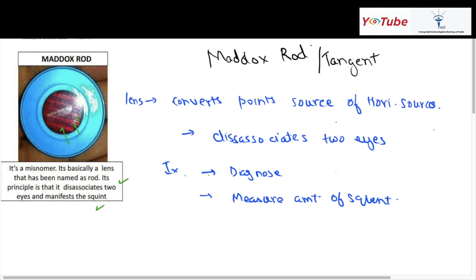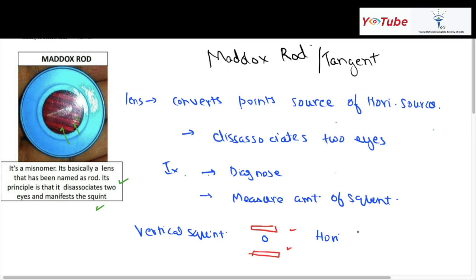Here you can see a red color disk with several parallel grooves. It converts a point source of light, when viewed through this lens, into a line perpendicular to the axis of the grooves. So if there is a vertical squint, the second image formed would be a horizontal line seen either above or below. In case of a horizontal squint, a vertical line would be seen either to the right or to the left.